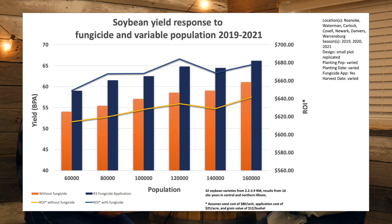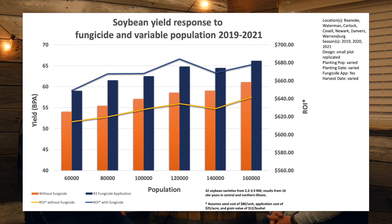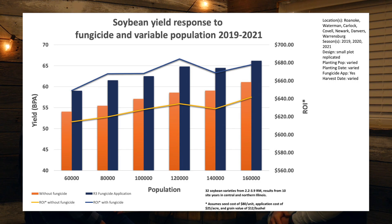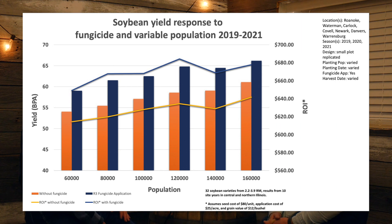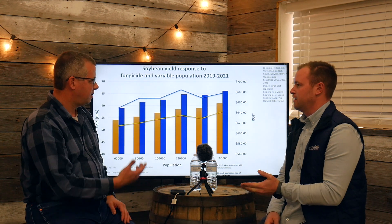Here we're looking at different populations with and without fungicide, ranging from 60,000 to 160,000, over the past three years. One thing that really stands out immediately is the fungicide line is consistently higher than the no-fungicide line across all populations. We see consistently about a $40 benefit to the fungicide application, even factoring in the cost of the application being around $30.